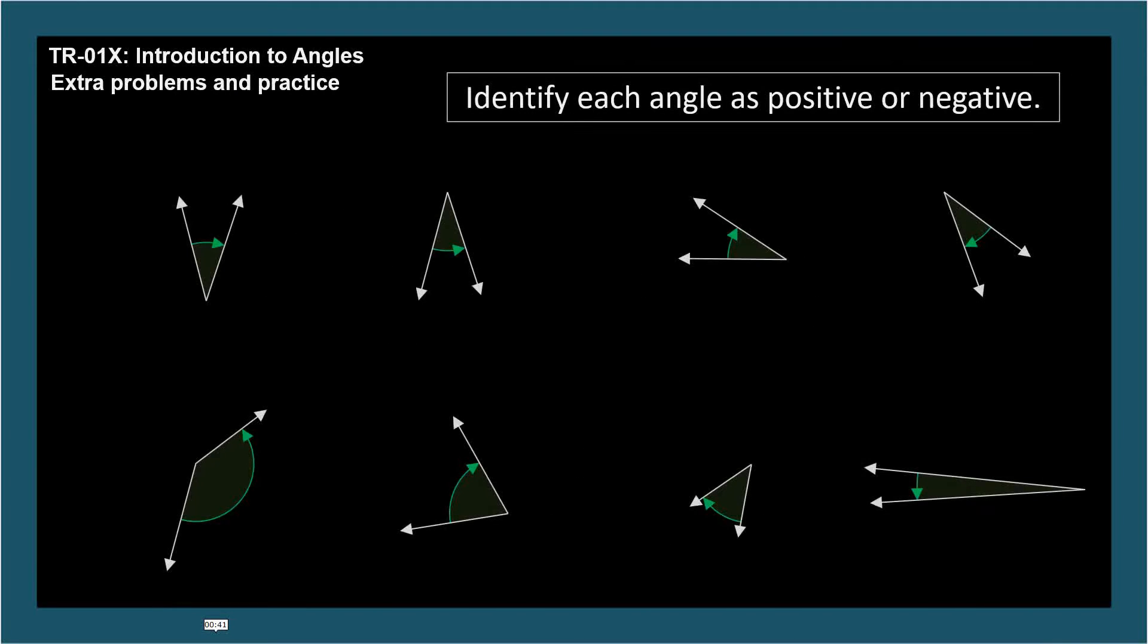Identify each angle as positive or negative. Please pause the video and record your answers. I'm going to reveal the answers all at once. Clockwise angles are negative. Counterclockwise are positive.